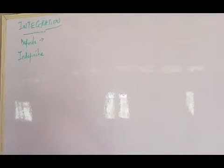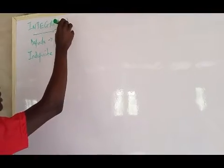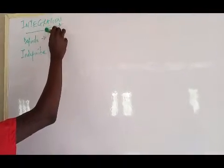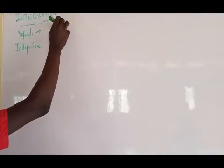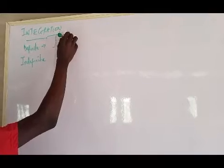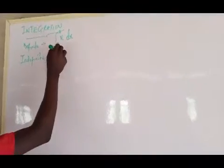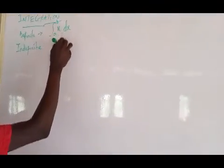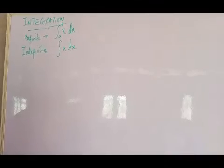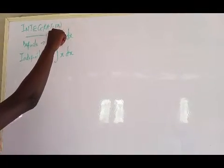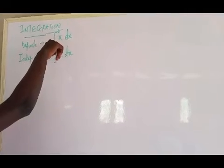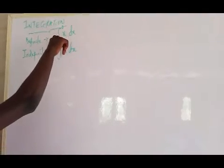Now a definite integral is the integral that has an upper limit and a lower limit. So this is an example of a definite integral. A definite integral is one that has the upper limit and the lower limit — this is the upper limit and this is the lower limit. We also call it upper integral and lower integral.